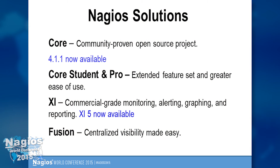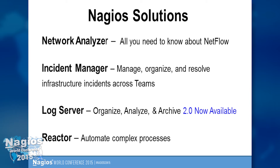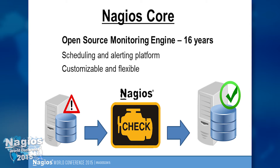The solutions we're going to talk about — we'll move really quick, but hopefully you'll have a good idea of the key features and value of each. We'll talk about Core, the original monitoring and alerting tool; the Core Student and Pro VMs; Nagios XI, the flagship commercial-grade monitoring, alerting, graphing, and reporting solution; Fusion for centralized visibility; Network Analyzer for NetFlow, SFlow, JFlow, IPFIX data; Incident Manager for team collaboration; Log Server, our second most popular solution; and Reactor, a free beta automation tool.